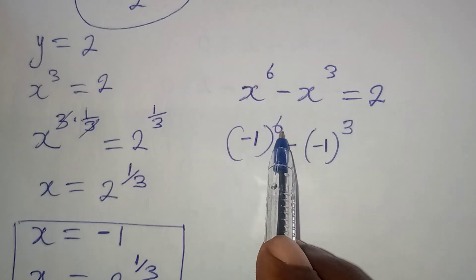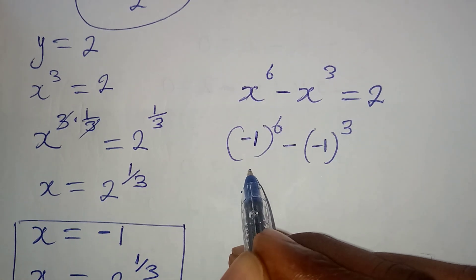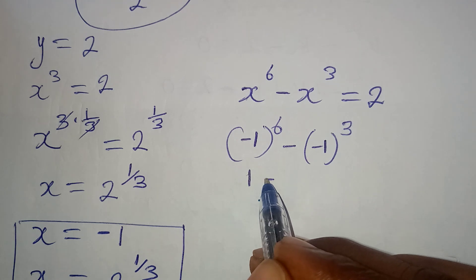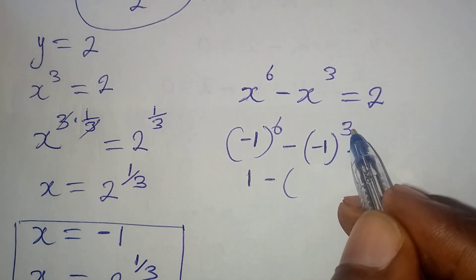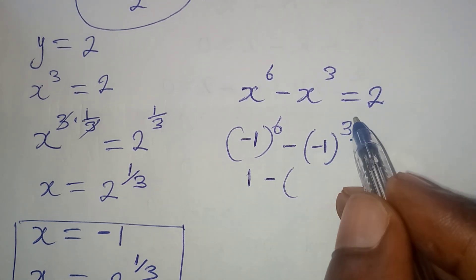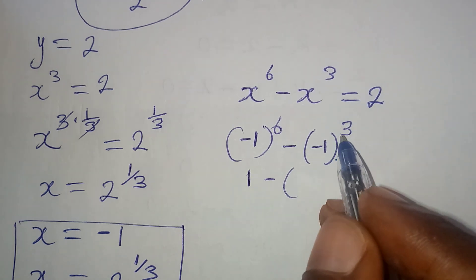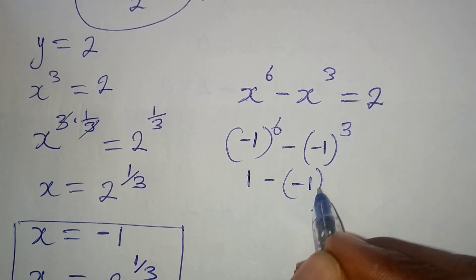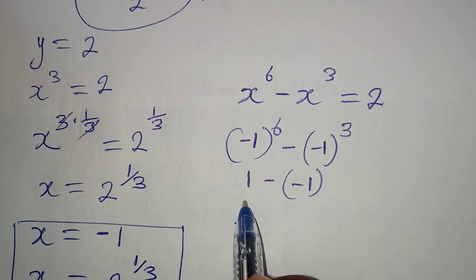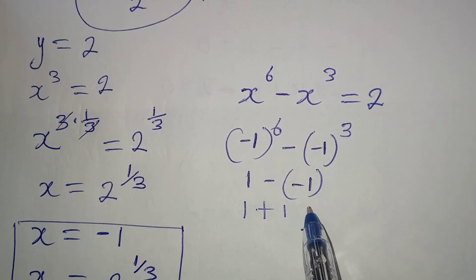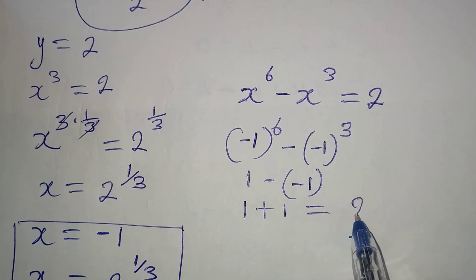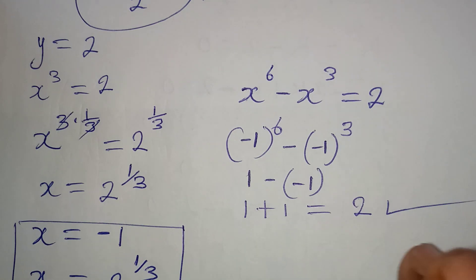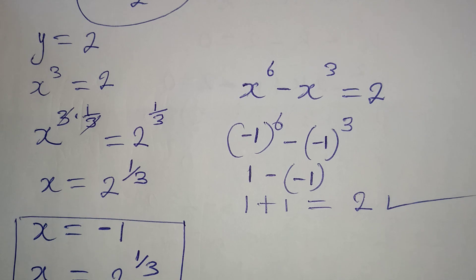Let's verify x equals minus 1. Negative 1 to the power of 6 gives positive 1. Then minus (negative 1 to the power of 3): because 3 is an odd number, it gives minus 1 again. So we have 1 minus (minus 1) which gives 1 plus 1, equal to 2. Therefore x equals minus 1 is correct.